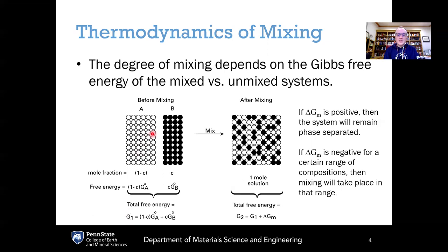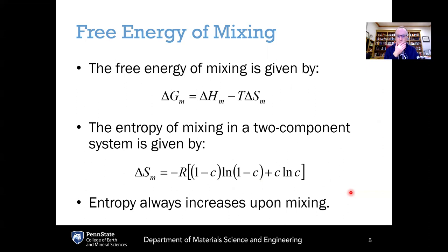If we mix the two jars together, the free energy in the mixed case is G2, expressed relative to the unmixed case: G2 equals G1 plus delta G_M, the change of free energy due to mixing. If delta G_M is positive, there is a free energy penalty to mixing — it is thermodynamically unfavorable, and the system will remain phase separated, like water and oil. On the other hand, if the free energy of mixing is negative for some range of compositions, then some degree of mixing will take place in that range.